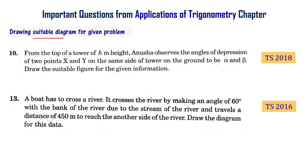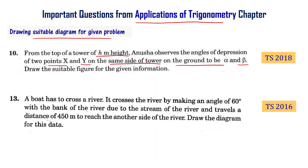Drawing a suitable diagram for a given problem is one of the important topics from the applications of trigonometry chapter. From the top of a tower of h meters height, Anusha observes the angles of depression of two points X and Y on the same side of the tower on the ground to be alpha and beta. Draw the suitable figure for the given information — this is the Telangana final exam 2018 question.